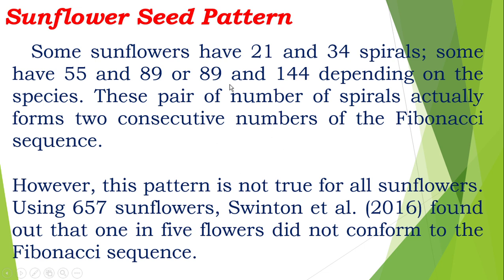The discussion of Fibonacci came from the sunflower seed pattern. Some sunflowers have 21 and 34 spirals; some have 55 and 89 or 89 and 144 depending on the species. However, this pattern is not true for all sunflowers. Using 657 sunflowers, Swinton et al. found that one in five flowers did not conform to the Fibonacci sequence.